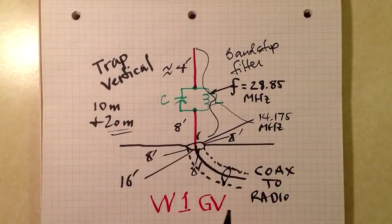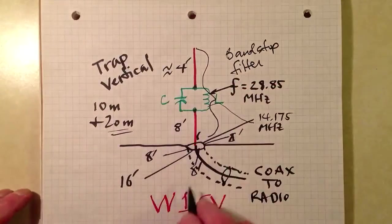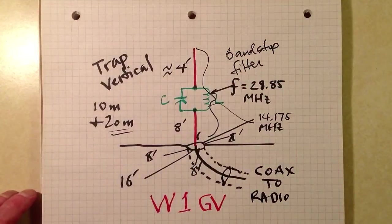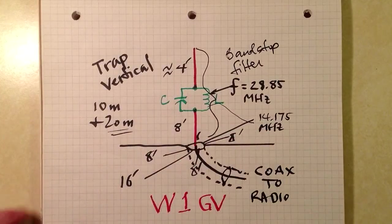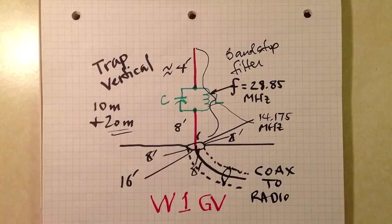A trap is a band stop filter that tops your antenna out at a frequency that you choose, which is the resonant frequency of that inductance capacitance parallel circuit.